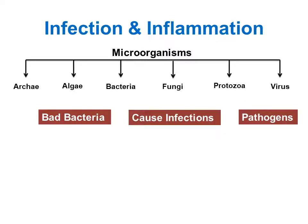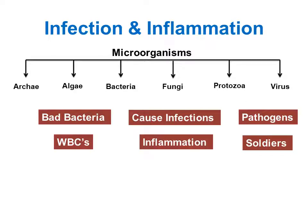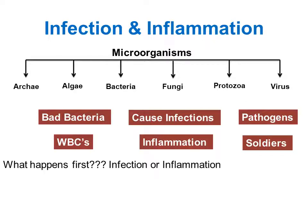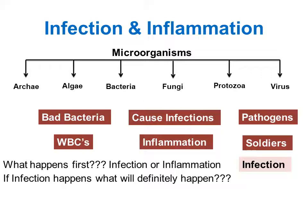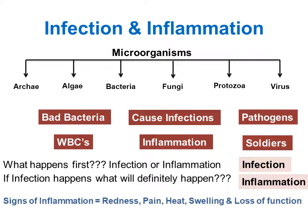Infection can be caused by any microorganism. When bacteria invade our body, who will protect us — who are the soldiers of our body? WBCs, or white blood cells. When WBCs accumulate at the site of infection, this process is called inflammation. What will happen first — infection or inflammation? Infection. If infection happens, what will definitely happen? Inflammation. Signs of inflammation are redness, pain, heat, swelling and loss of function.